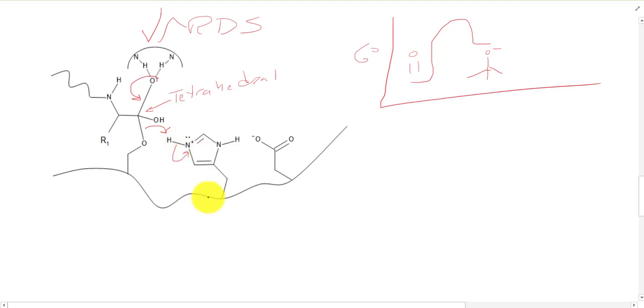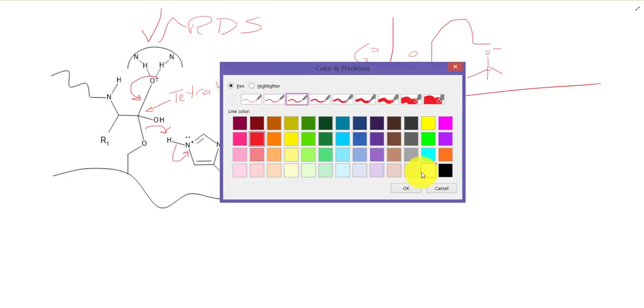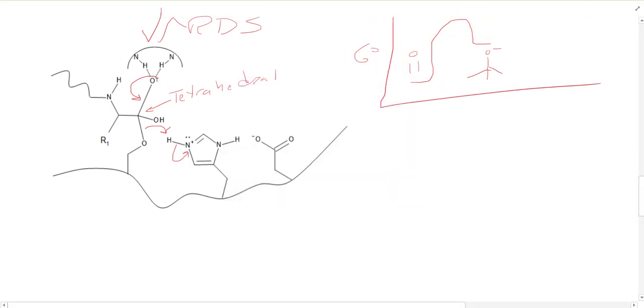Looks like there's a small error here. This should not have any lone pairs. Go away, lone pairs. Alright, you get it. So there shouldn't be a lone pair on that nitrogen.